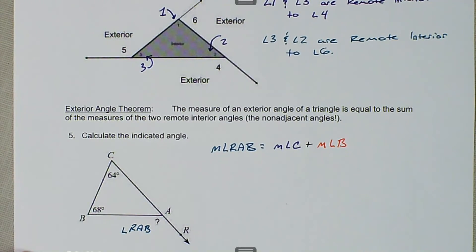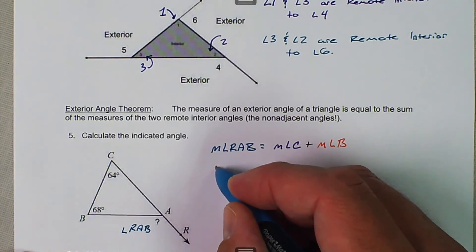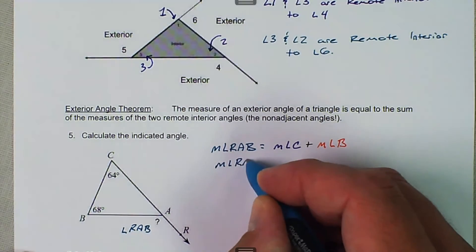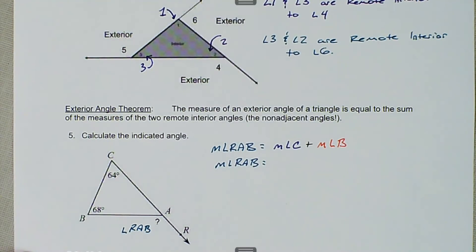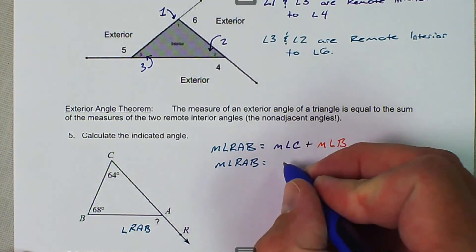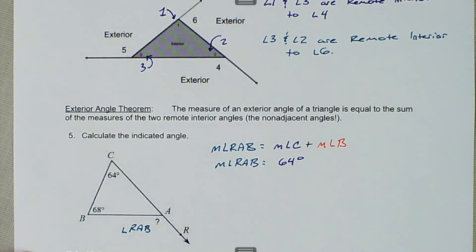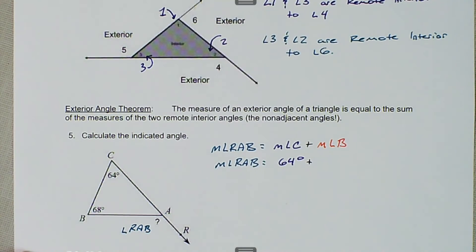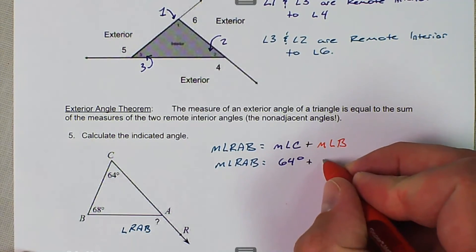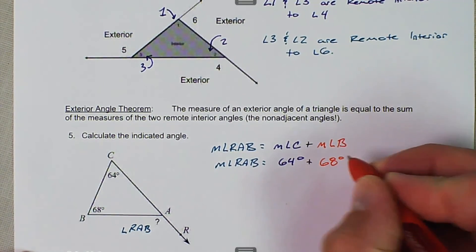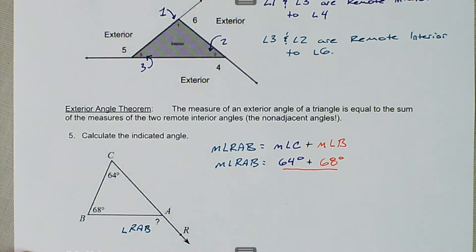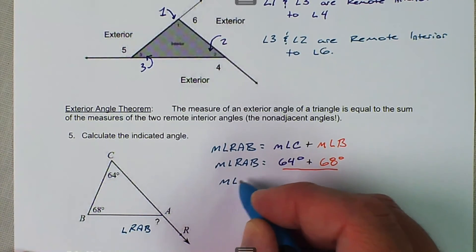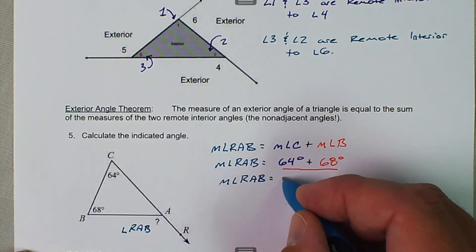Then we can substitute in the values that we know. We don't know what the measure of angle RAB is yet. We know that the measure of angle C is equal to 64 degrees, and the measure of angle B is 68 degrees. When we add those two together, we get the measure of angle RAB is equal to 132 degrees.